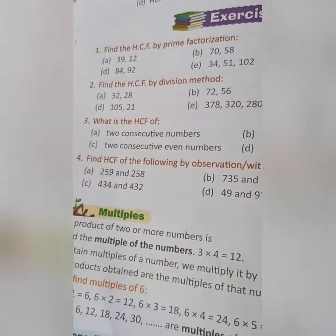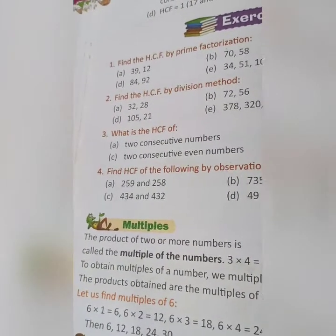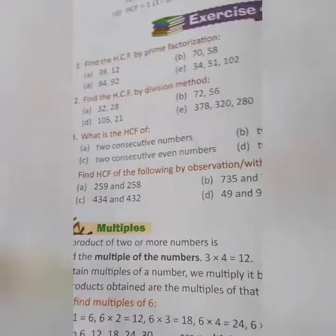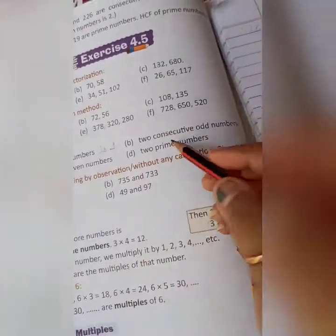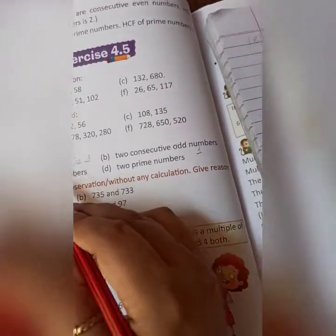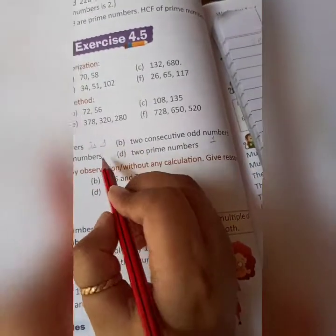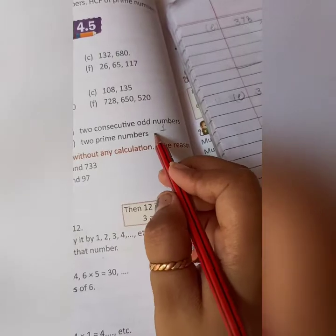F part you will do yourself. Next is, what is the HCF of two consecutive numbers? Third question. HCF of two consecutive numbers is 1, two consecutive odd numbers is also 1, two consecutive even numbers is 2, and two prime numbers is 1.